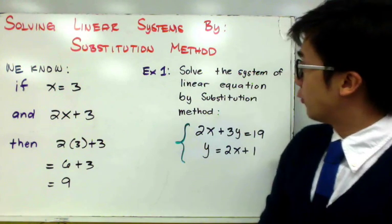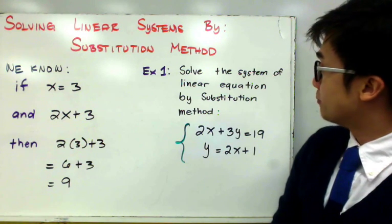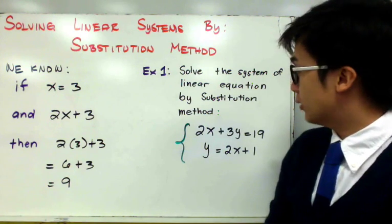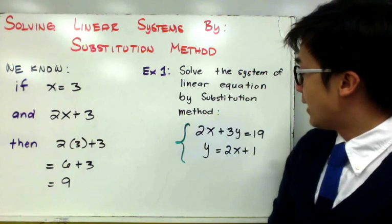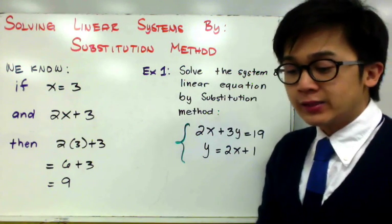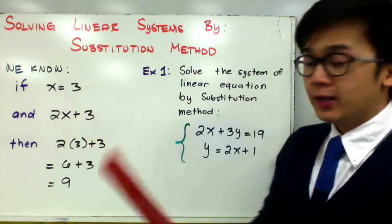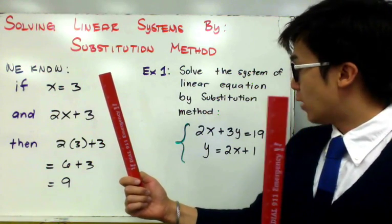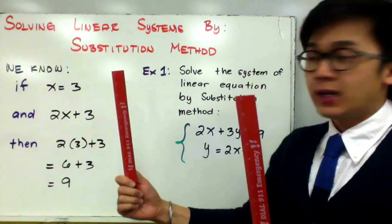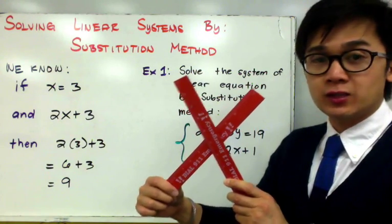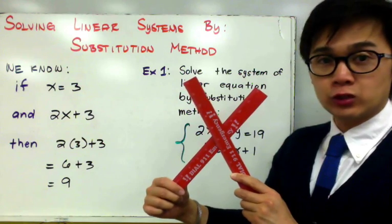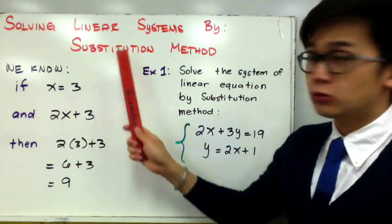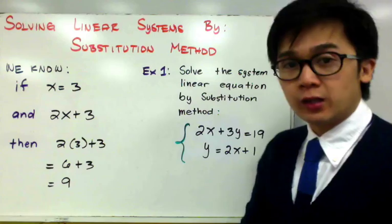In our first example, we need to solve a linear system by substitution method. We have 2x plus 3y is equal to 19, and y is equal to 2x plus 1. Conceptually, in solving a linear system, if we find the point of intersection of these two lines, we'll find the solution. But this time we are not using the graph; we are using the substitution method.